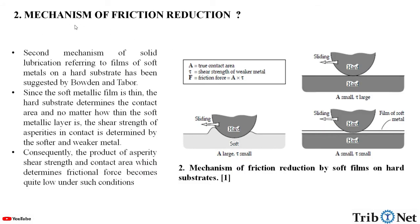Next, let us understand the mechanism of friction reduction. The second mechanism of solid lubrication, referring to films of soft metals on a hard substrate, has been suggested by Borden and Tobit. Since the soft metallic film is thin, the hard substrate determines the contact area, and no matter how thin the soft metallic layer is, the shear strength of asperities in contact is determined by the softer and weaker metal. Consequently, the product of asperity shear strength and the contact area, which determines the frictional force, becomes quite low under such conditions.